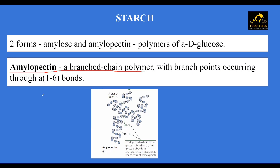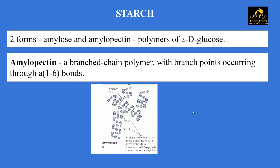Amylopectin is a branched chain polymer. The branching occurs at alpha-1,6 glycosidic bonds, while the linear portions are connected by alpha-1,4 bonds. Both amylose and amylopectin occur in cereals, grains, potatoes, legumes, and other vegetables. Amylose contributes around 15 to 20%, whereas amylopectin makes up around 80 to 85% of the total starch content of food.